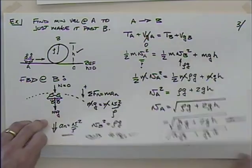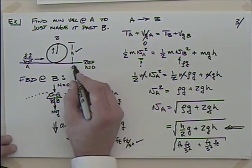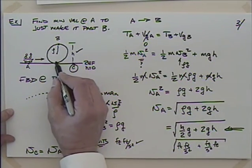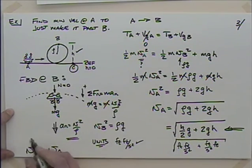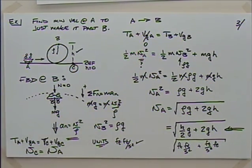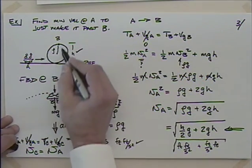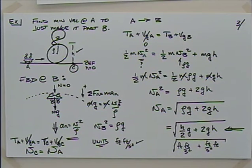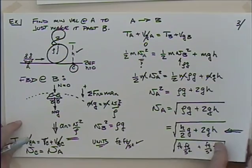What would the velocity at C be? It'd be the velocity at A, because if we go from A to C with the same height, T sub A plus VGA equals T sub C plus VGC. If these two are at the same height, the kinetic energies have to be equal. Had the roller coaster taken a different path between A and C, it wouldn't have mattered for that calculation — that's the beauty of conservation of energy solutions.